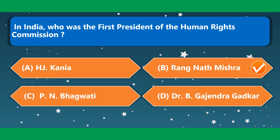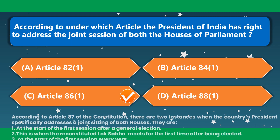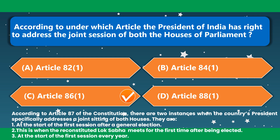In India, who was the first President of the Human Rights Commission? Ranganath Misra. Under which article does the President of India have the right to address the joint session of both Houses of Parliament? It is Article 86(1). Option C is the correct option.